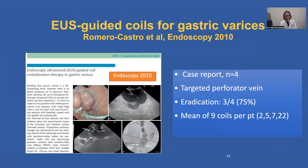The same group reported on eliminating the glue altogether and just using coils to treat gastric varices — a nice proof of concept as well. These coils have also been used by the radiologists; we're just borrowing their technology. But a mean of nine coils were required per patient, up to 22 coils, so obviously this is quite costly and labor intensive.